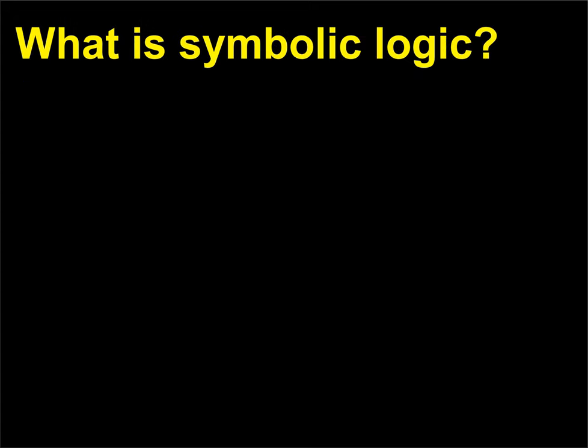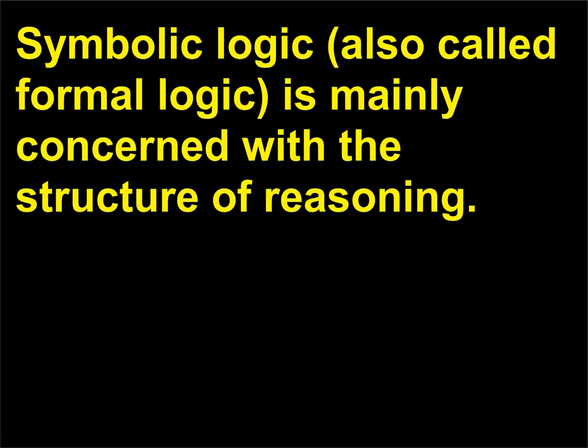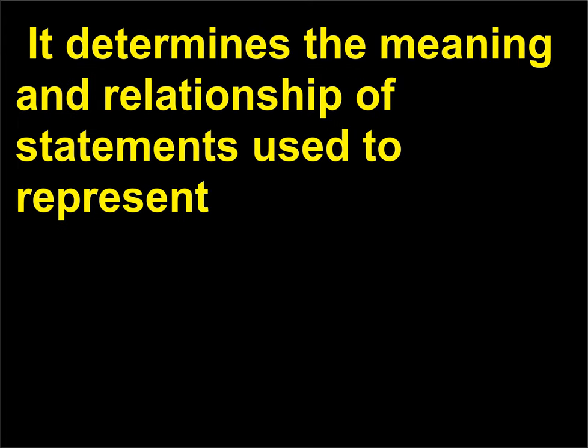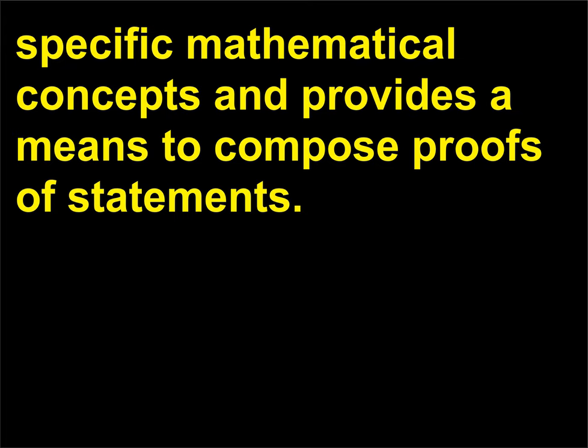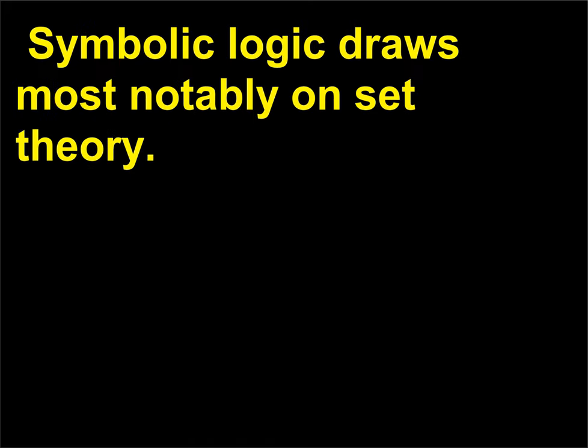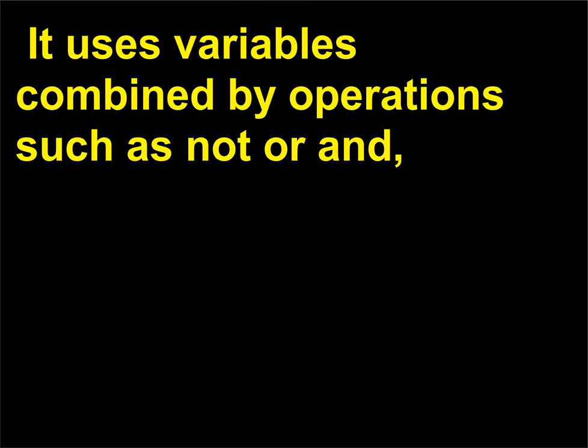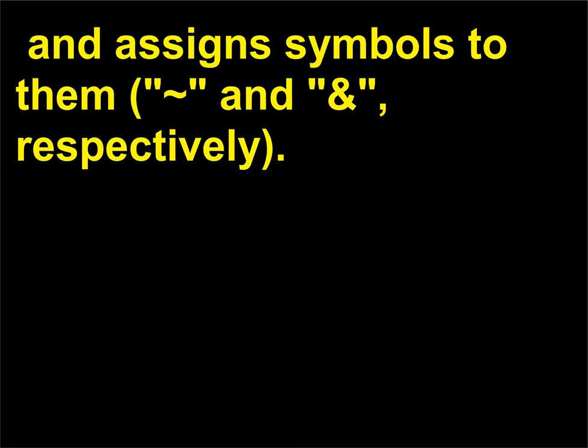What is symbolic logic? Symbolic logic, also called formal logic, is mainly concerned with the structure of reasoning. It determines the meaning and relationship of statements used to represent specific mathematical concepts and provides a means to compose proofs of statements. Symbolic logic draws most notably on set theory. It uses variables combined by operations such as not or and, and assigns symbols to them (¬ and ∧, respectively).